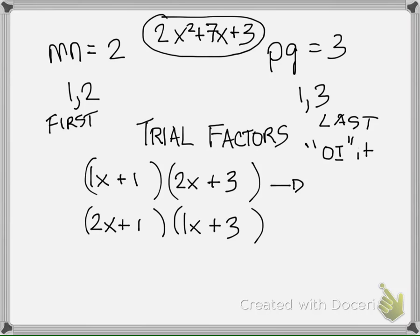When I OI this, I need to multiply the outside terms and I need to multiply the inside terms. I get 3x plus 2x. Add those together, I get 5x. Now look back up at the top. What are we trying to factor? We want a b factor of 7. So that does not work.